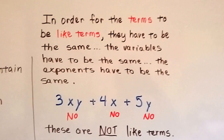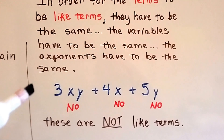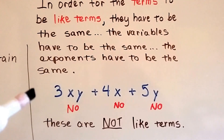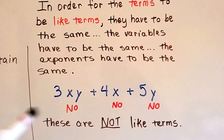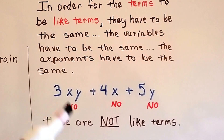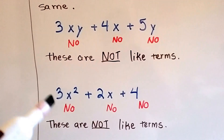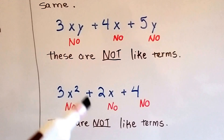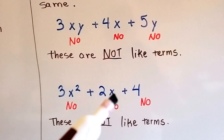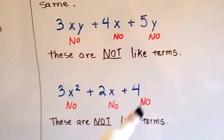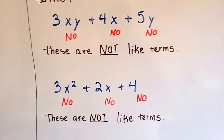Look at this one: we've got 3xy plus 4x plus 5y. Every single term is different — the variables are not the same. Nope, nope, nope. And look at this one: 3x squared plus 2x plus 4. This one doesn't have a square for the x, and this one doesn't have an x or a square. Nope, nope, nope — they're not like terms.